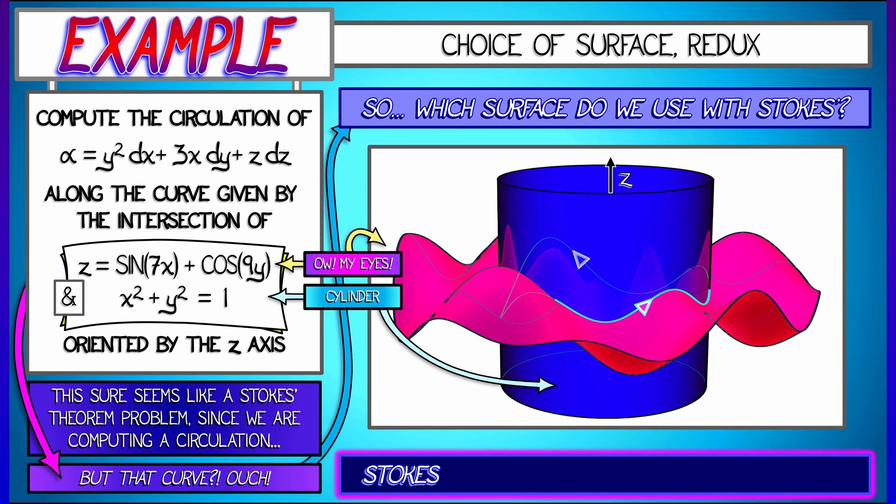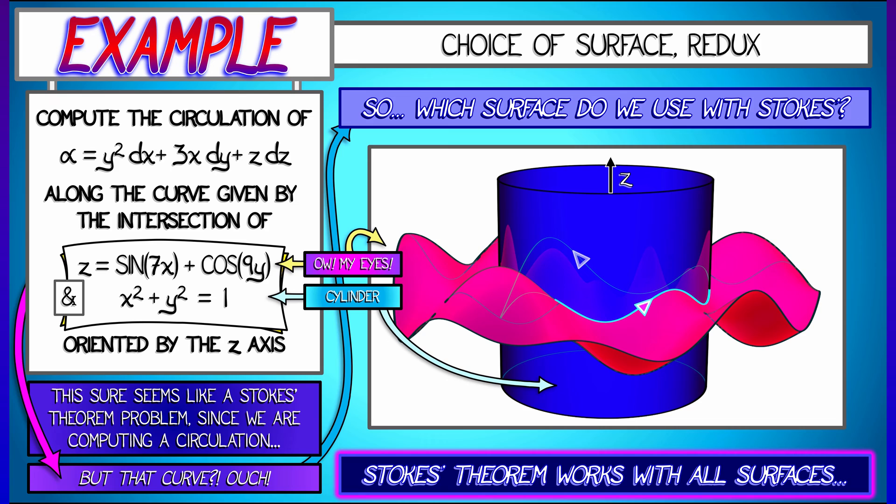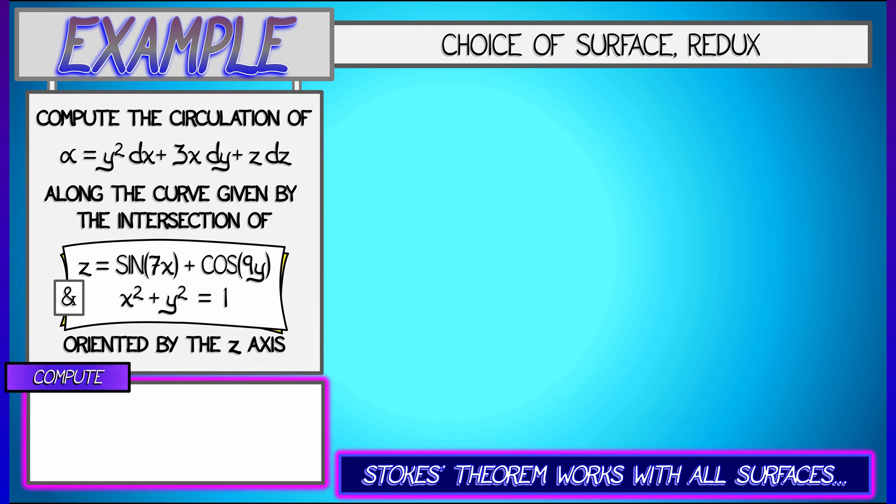Now let's keep in mind that Stokes theorem works with all surfaces. Is there a better surface I could choose? Well, the way to answer that is to compute d alpha to see what it is. Let's compute that derivative.